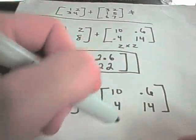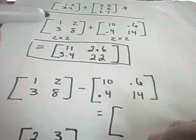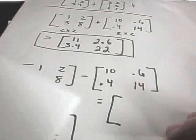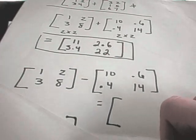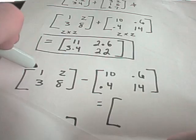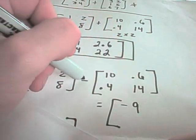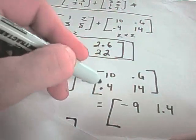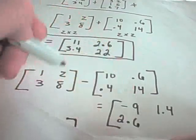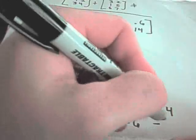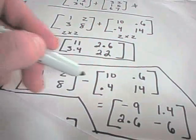Subtraction is exactly the same thing. So suppose I want to calculate this matrix. Now you just subtract corresponding entries. So 1 minus 10 is negative 9. 2 minus 0.6 would give you 1.4. 3 minus 0.4 would give you 2.6. And lastly, 8 minus 14 would give you negative 6. So that would be the solution if you subtracted these original two matrices.